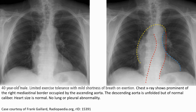This is a case of a 40-year-old male with limited exercise tolerance and mild shortness of breath on exercise. His chest X-ray shows prominence of the right mediastinal border occupied by the ascending aorta. The ascending aorta is unfolded but of normal caliber. Heart size is normal with no lung field abnormality.